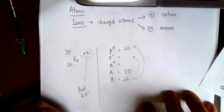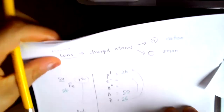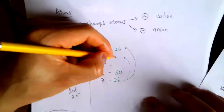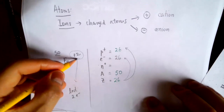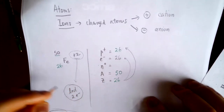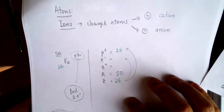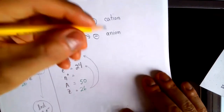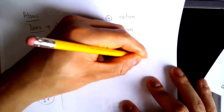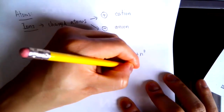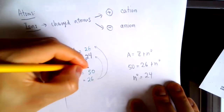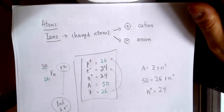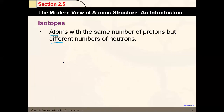If an atom has a minus 2 charge, it gained two electrons. If it has a plus 2 charge, it lost two electrons. In the neutral state, iron has 26 electrons, but since it lost two, the number of electrons is now 24. For neutrons: A = Z + N, so 50 = 26 + N, meaning the number of neutrons equals 24. We will do more problems like this in problem-solving videos.